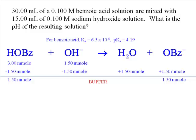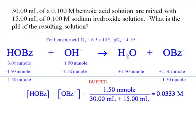The Henderson-Hasselbalch equation states that pH equals pKa plus the log of the concentration of the conjugate base divided by the concentration of the conjugate acid. Both components — the conjugate base and conjugate acid — have the same number of millimoles and the same volume. We divide 1.5 millimoles by 45 milliliters total volume (30 from acid + 15 from base), giving 0.0333 molar. Since both concentrations are equal, the log term is zero, and pH simply equals the pKa, which is 4.19.